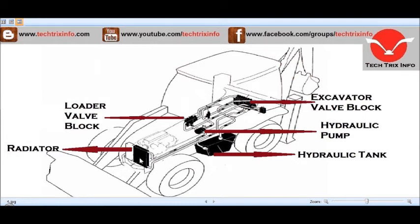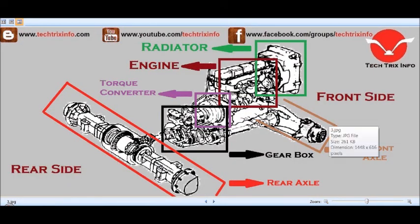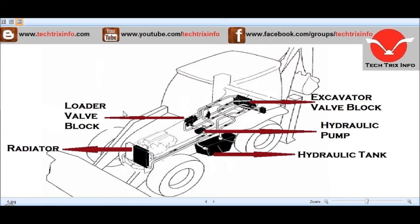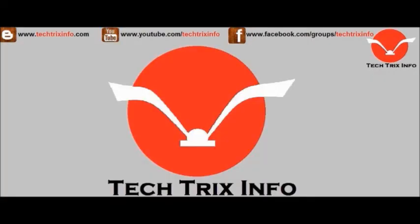I believe you now have an idea about the automobile components — the engine, torque converter, gearbox, and axles — which help to mobilize the machine, and the hydraulic components — the loader valve block, the excavator valve block, the hydraulic pumps, the connecting hoses, and the hydraulic tank — which help the machine to do its excavation and loading.